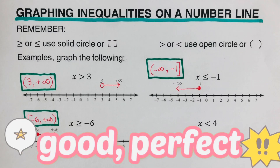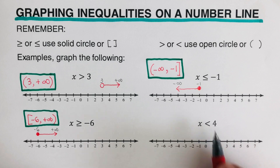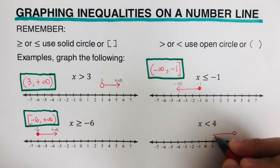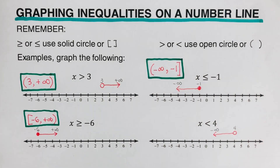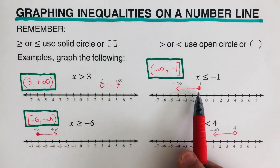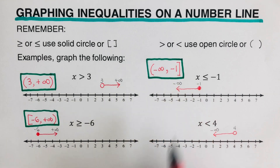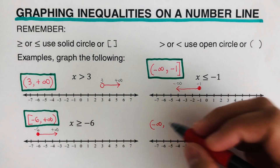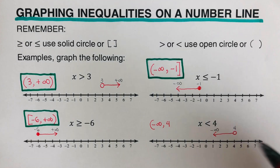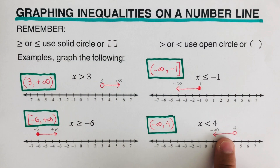Now for x < 4: since there's no bar underneath, we use an open circle on 4. The arrowhead is directed to the left, going to negative infinity. Note the difference — negative 1 was included in the previous example, but 4 is not included here since it's an open circle. In interval notation, the solution is (-∞, 4), using a parenthesis since 4 is an open circle.